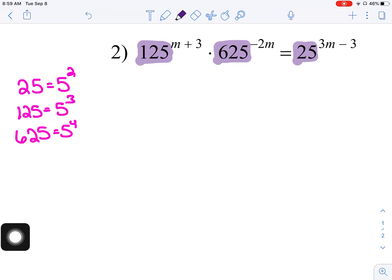Okay? So, let's see. 125 is going to get replaced with, let me actually write with a pen here. So, that would be 5 cubed to the m plus 3. Let me read what I actually wrote there. All right, times 625 is 5 to the 4th, negative 2m. And then, 25 is going to get replaced with 5 squared, 3m minus 3.